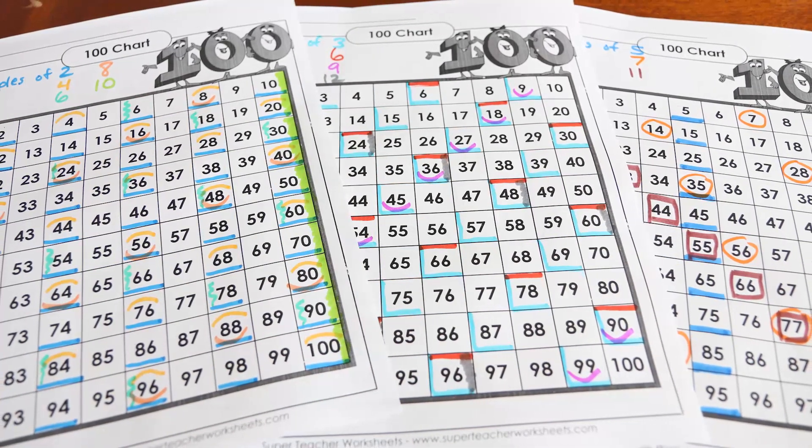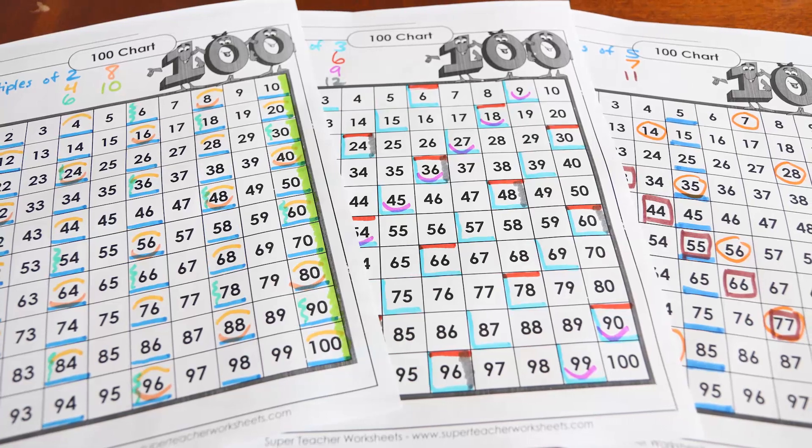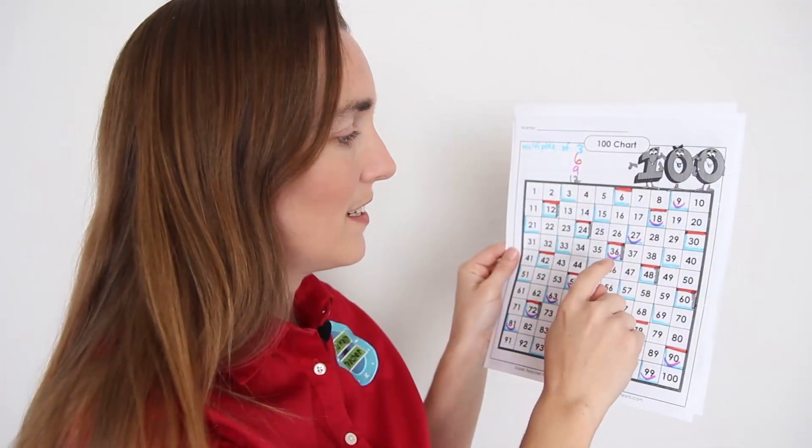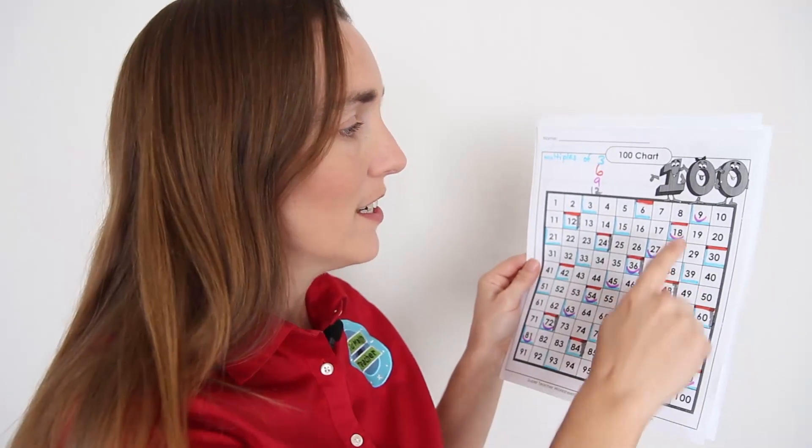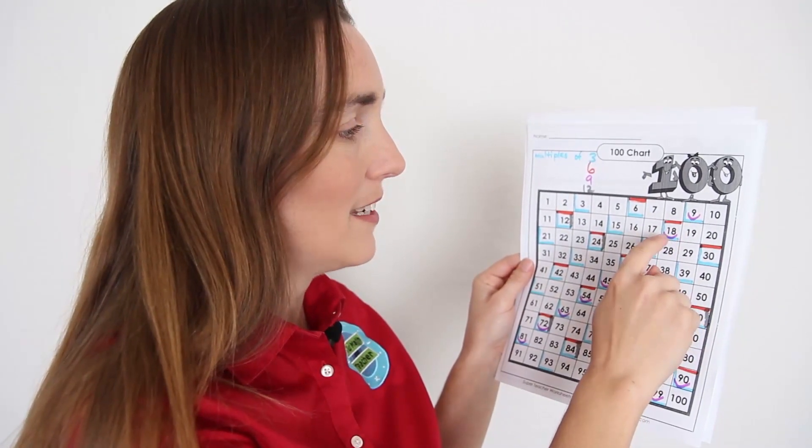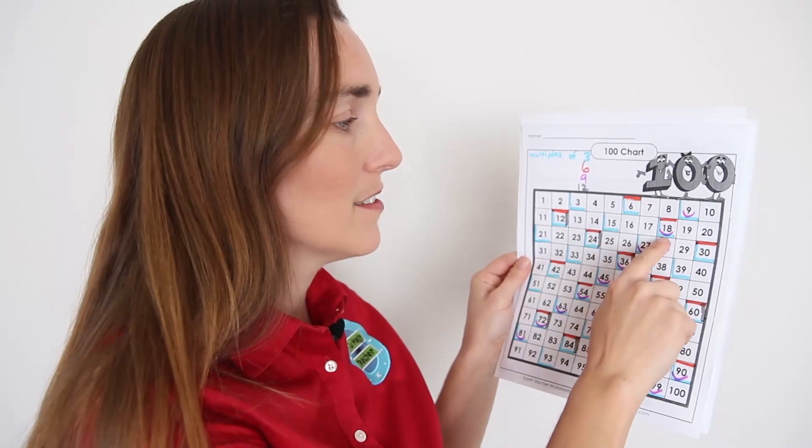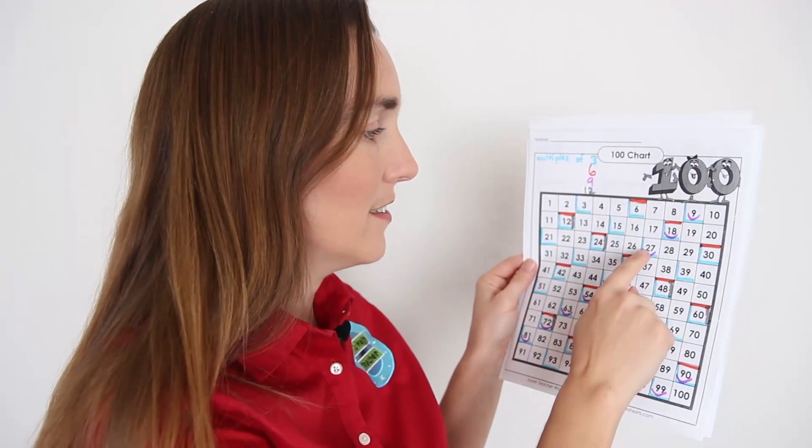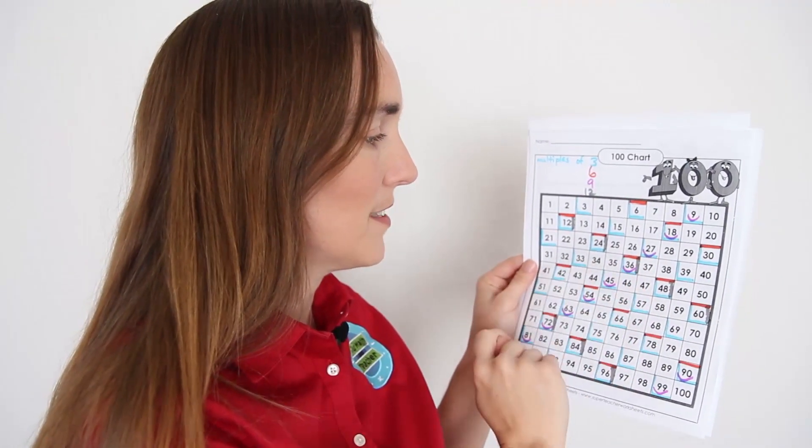I know some of my kids struggle with the 9s. And it's interesting to see that each of these multiples of 9, the digits actually add up to 9. That's a little math trick. So 9 and then 1 plus 8, 18 is 9. 2 plus 7 would be 9. 3 plus 6 would be 9. It's just a little trick you can show your kids.